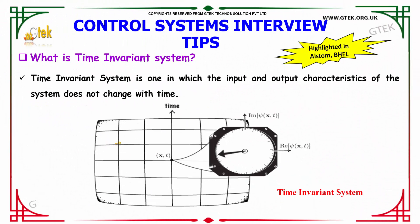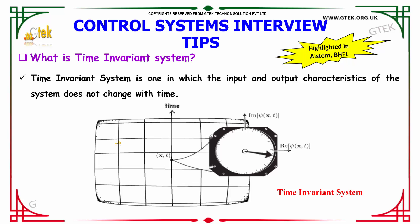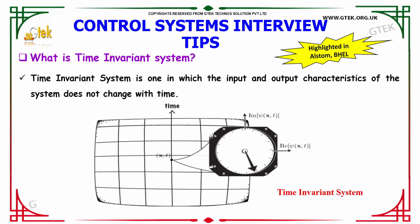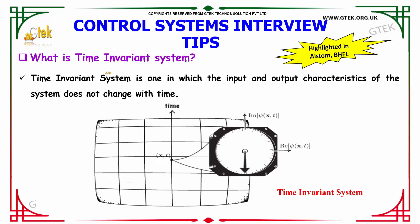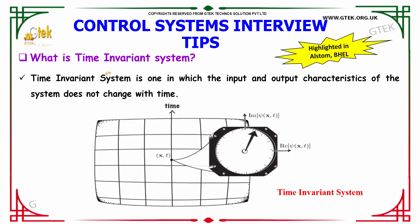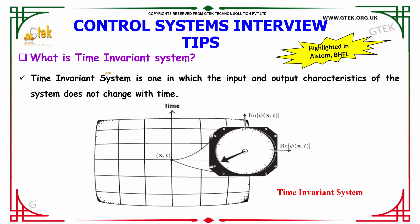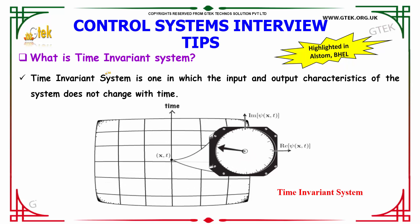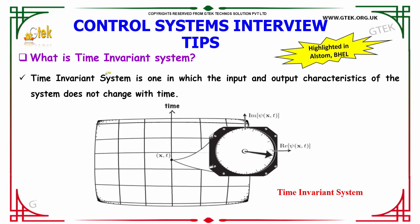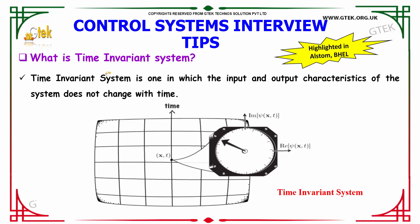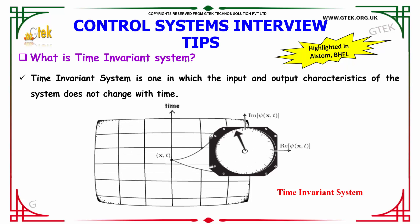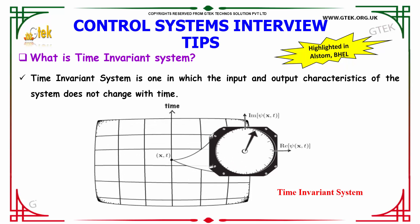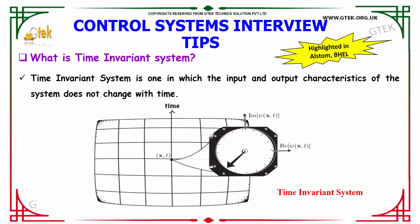What is meant by a time invariant system? According to control system theory, a time invariant system is one in which the input and output characteristics of the system do not change with time.